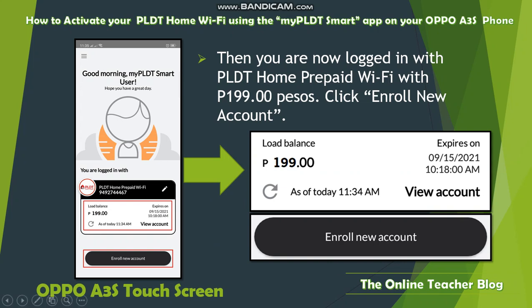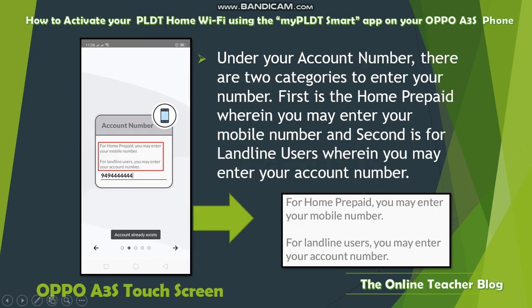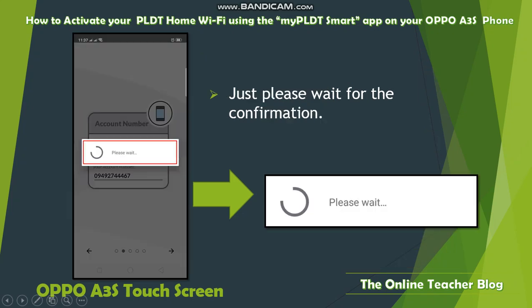Under account selection, select your current brand subscription — PLD, Smart, Sun, or TNT. Since we are using PLD, click that option. Under your account number, there are two categories: Home Prepaid, where you enter your mobile number, and Landline, where you enter your account number. Enter the appropriate number and wait for confirmation.